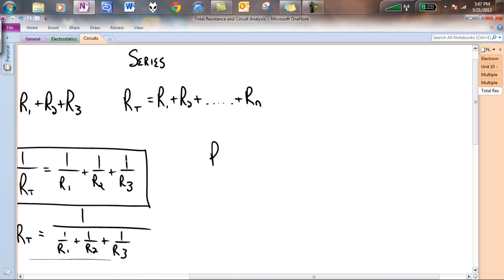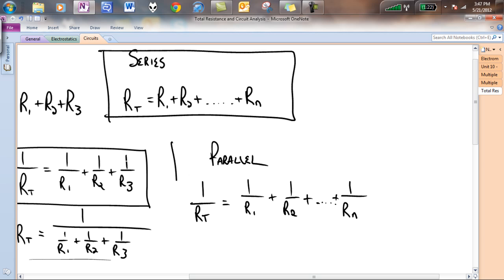So for our parallel case, just to make it a little bit more general, it doesn't matter how many resistors you have, 1 over R total is going to equal 1 over R1 plus 1 over R2 plus dot, dot, dot, doesn't matter how many you have, if there's 100 in parallel, plus 1 over R to the nth. And these are our two final equations for the year in order to get the series and parallel setups.